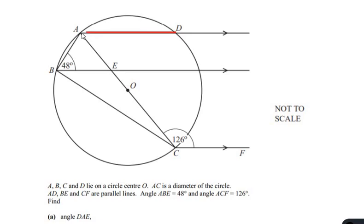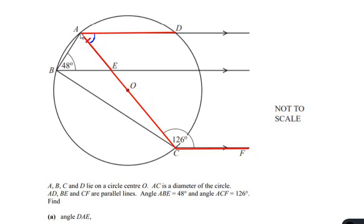We are asked to find angle DAE, the small angle. To find this we are going to use the properties of the parallel lines. We can see that AD is parallel to CF, and AC is acting as a transversal line between the two parallel lines, cutting line AD at point A and line CF at point C.